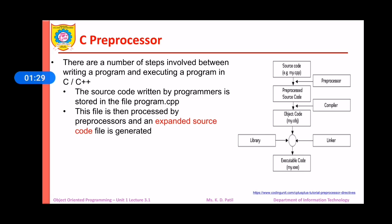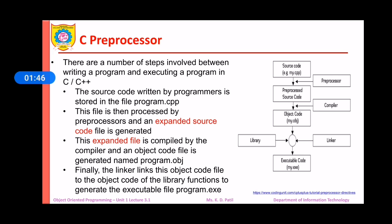A programmer writes a source code in a code editor and stores that source file with program.cpp. After that, this file is processed by the preprocessor and an expanded source code file is generated. This expanded file is compiled by the compiler and an object code file is generated named as program.obj. Finally, the linker links this object code file to the object code of library functions to generate the executable file named as program.exe.